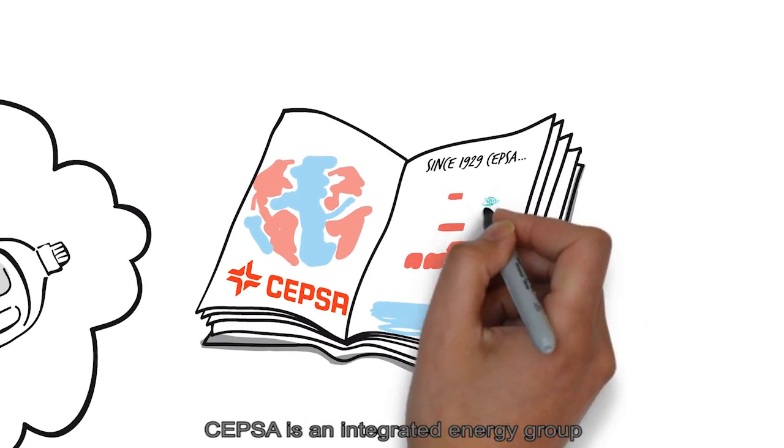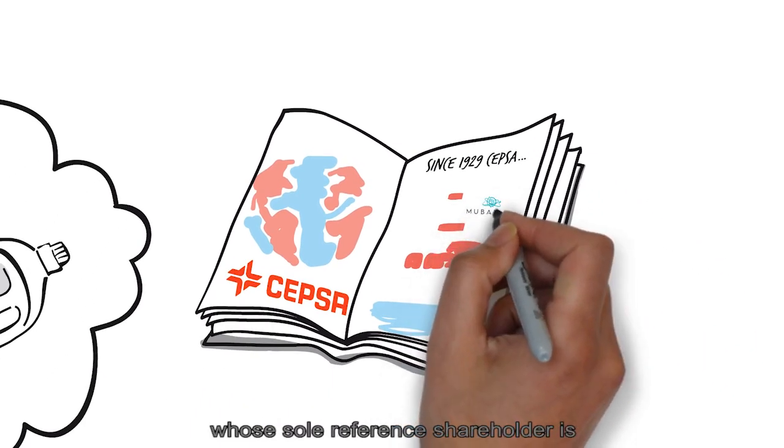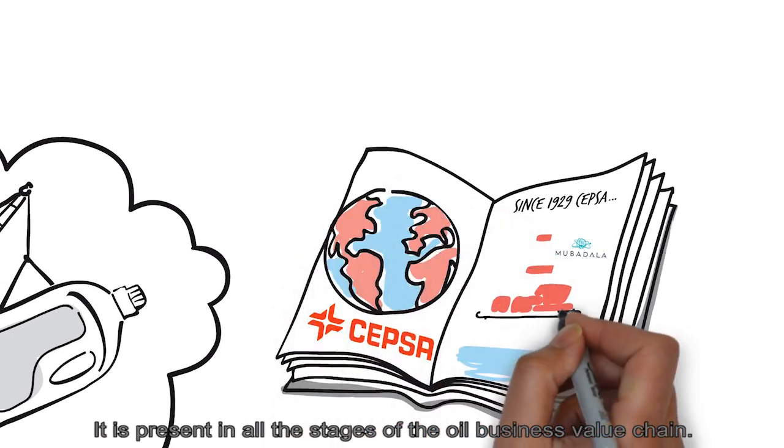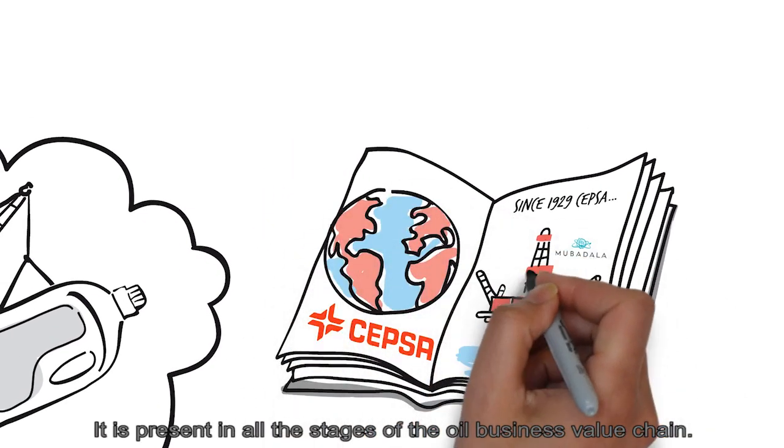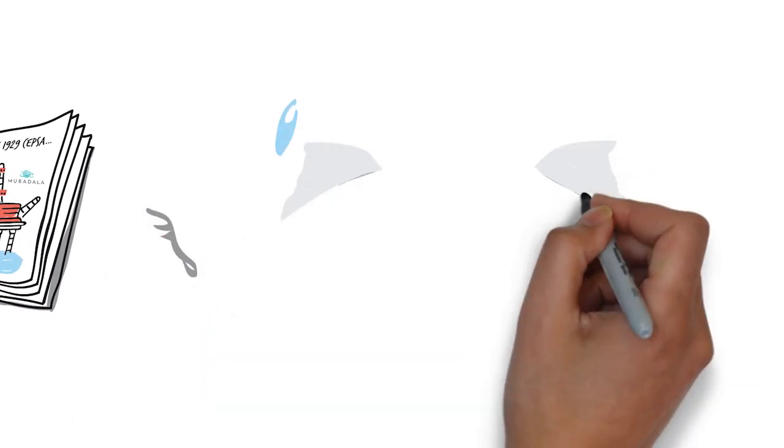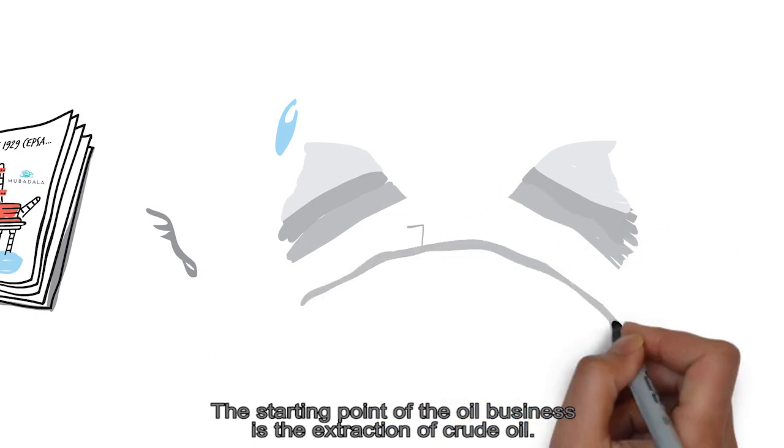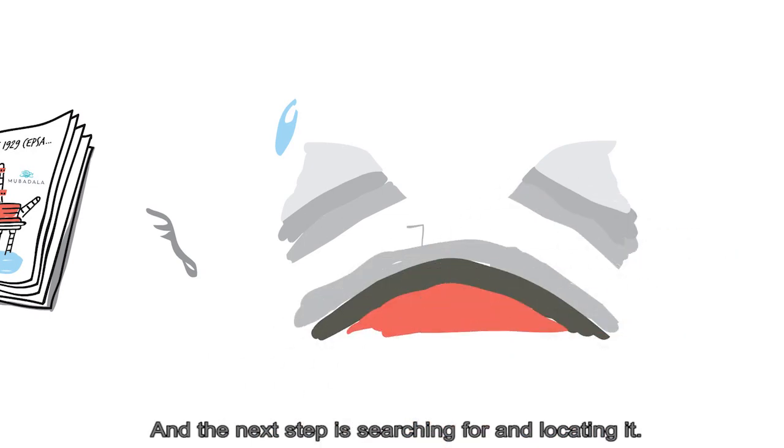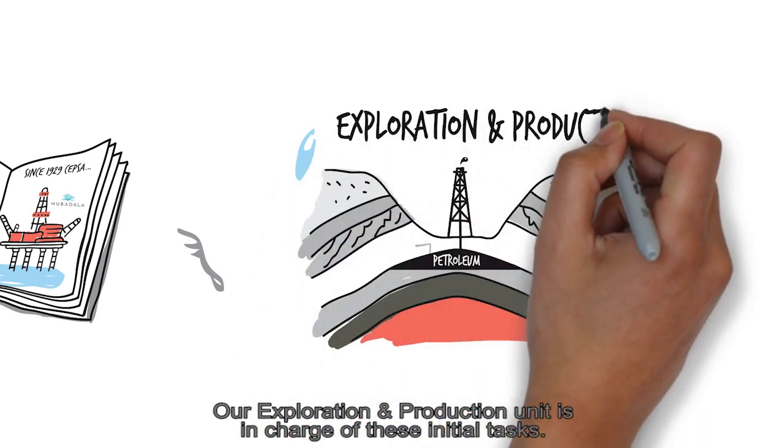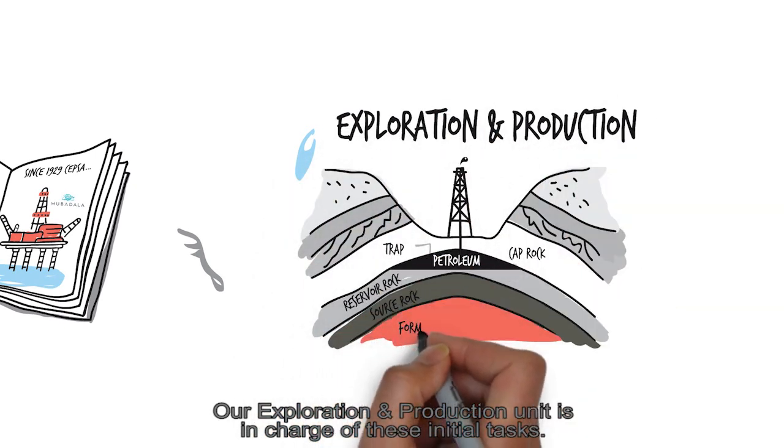CEPSA is an integrated energy group whose sole reference shareholder is the Mubadala Investment Company. It is present in all stages of the oil business value chain. The starting point is the extraction of crude oil, and the next step is searching for and locating it. Our Exploration and Production unit is in charge of these initial tasks.